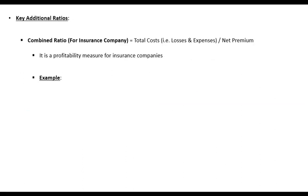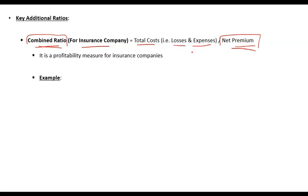Starting with the additional ratios — the first ratio is the combined ratio. The combined ratio is used for insurance companies to analyze their profitability and performance. It is simply a ratio of cost to premium. Premium is like revenue for the insurance company — it is the charge the insurance company takes for providing insurance. Cost includes both losses during uncertain events and the expenses of running the business.